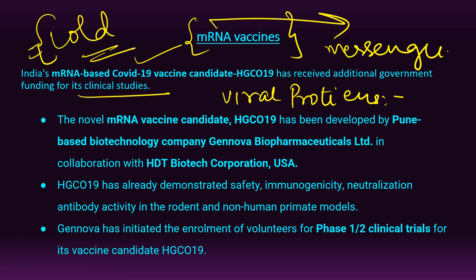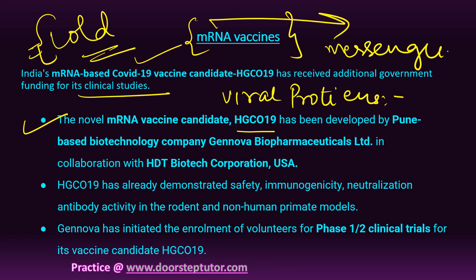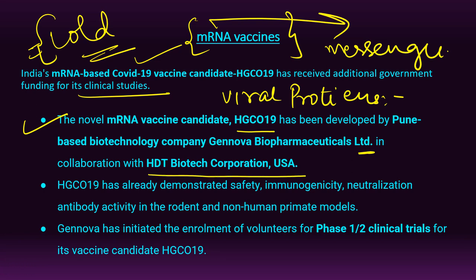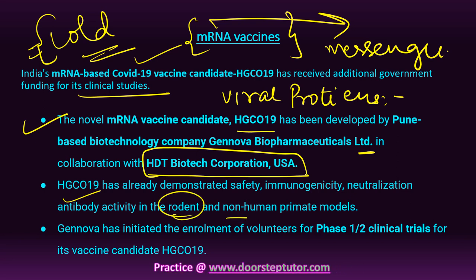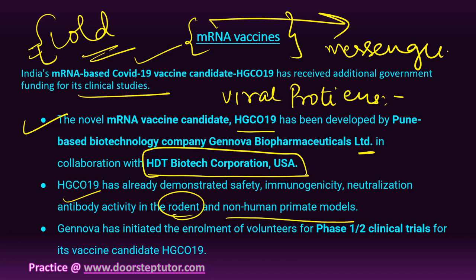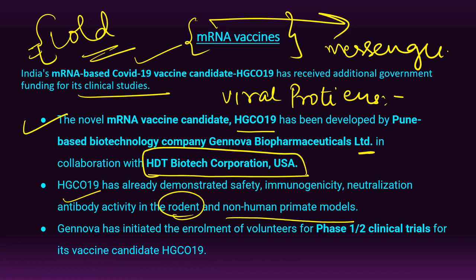The immune system detects these viral proteins and starts to produce a defensive response. The novel mRNA vaccine candidate HGCo19 has been developed by Pune-based Gennova Pharmaceuticals Limited in collaboration with HDT Biotech Corporation, USA. HGCo19 has already demonstrated safety, immunogenicity, and neutralization antibody activity and was tested on human primate models. Gennova has initiated enrollment of volunteers for clinical trials.